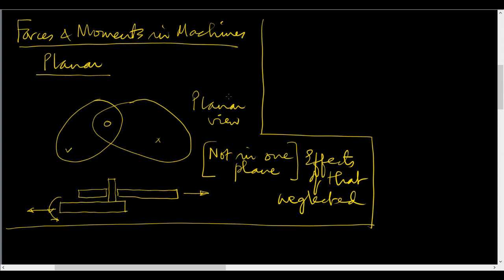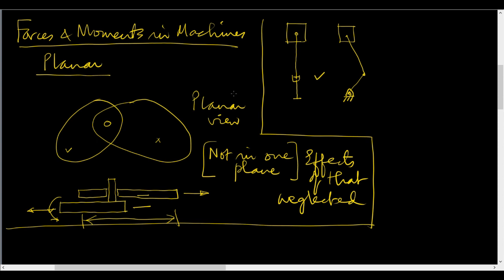It may be symmetrical. For example, suppose you have a piston, connecting rod, and crank — the side view being the piston, connecting rod, and crank. It might be a symmetrical arrangement, in which case the planar analysis may actually be quite good. In other situations, if the offset is not very big and these dimensions are very big, then it may be good. In other cases, you may still be interested in a planar analysis and then put some additional calculations to figure out what the effect of imperfect planar arrangement is.